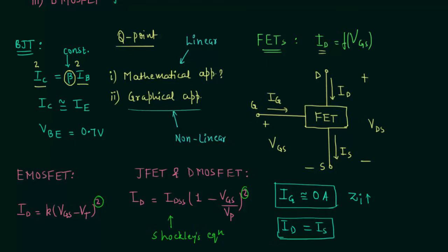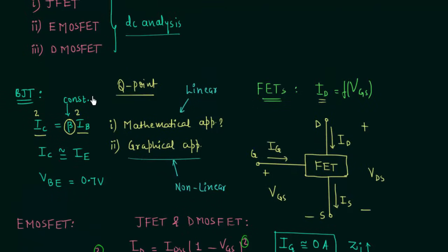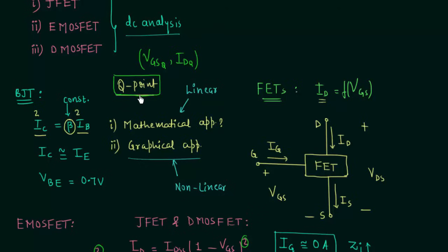The reason we perform the DC analysis is to find out the Q-point, also called the quiescent point or operating point. This point has the coordinates VGS_Q and ID_Q, where Q represents the Q-point. Our main aim is to find out VGS_Q and ID_Q for different biasing schemes. In the next lecture, I will explain the fixed bias configuration of JFET.